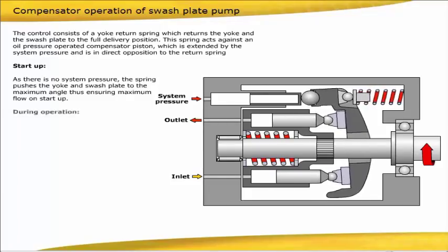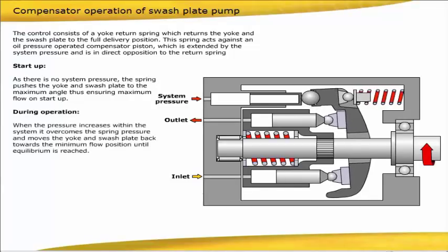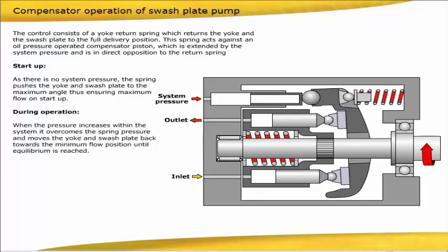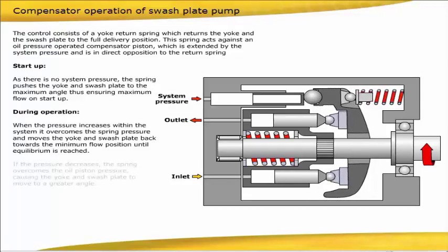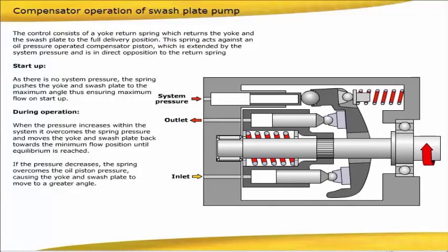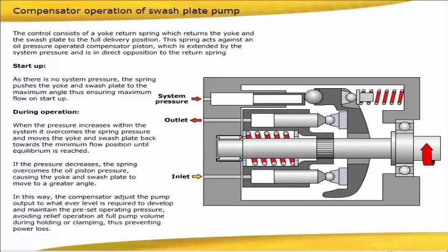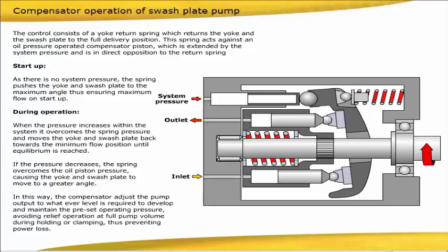During operation, when the pressure increases within the system, it overcomes the spring pressure and moves the yoke and swashplate back towards the minimum flow position until equilibrium is reached. If the pressure decreases, the spring overcomes the oil piston pressure causing the yoke and swashplate to move to a greater angle. In this way, the compensator adjusts the pump output to whatever level is required to develop and maintain the preset operating pressure, avoiding relief operation at full pump volume during holding or clamping, thus preventing power loss.